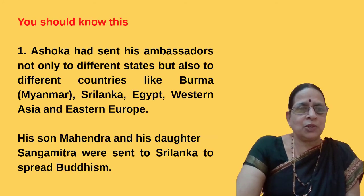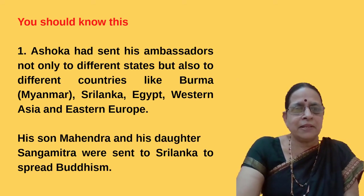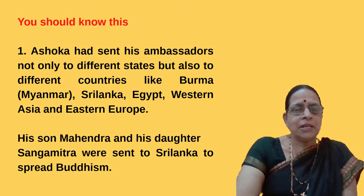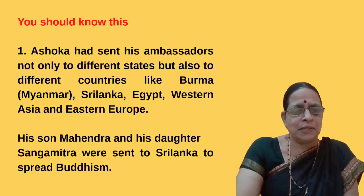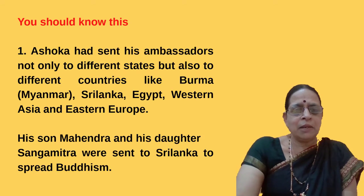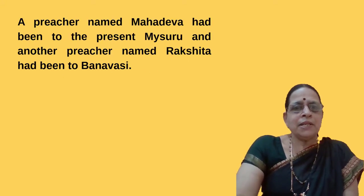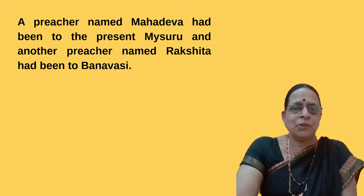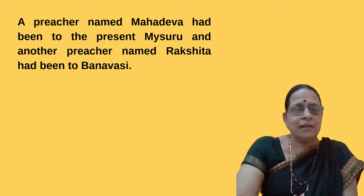There is some information in the textbook about Ashoka. Ashoka had sent his ambassadors not only to different states but also to different countries like Burma (Myanmar), Sri Lanka, Egypt, Western Asia, and Eastern Europe — showing his interest in spreading Buddhism. His son Mahendra and daughter Sangamitra were sent to Sri Lanka to spread Buddhism. A preacher named Mahadeva had been to present-day Mysore, and another preacher named Rachita had been to Panavasi, which is in North Karnataka, very near to Shirasi.